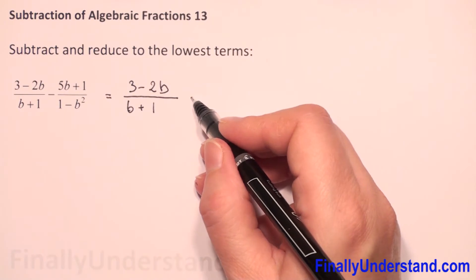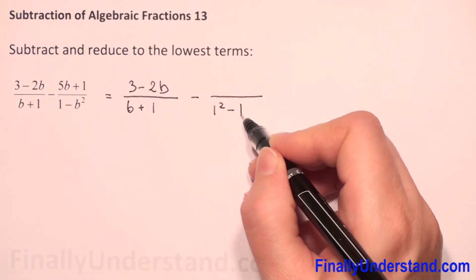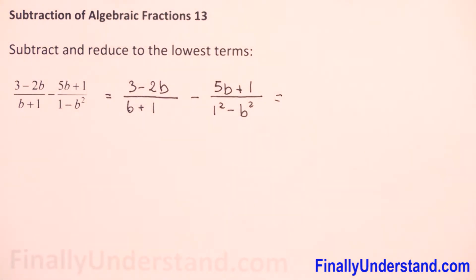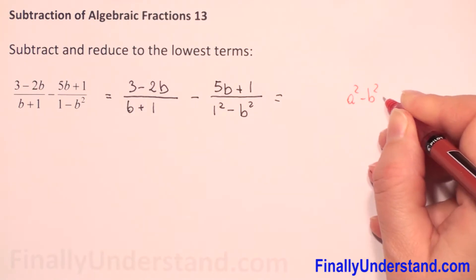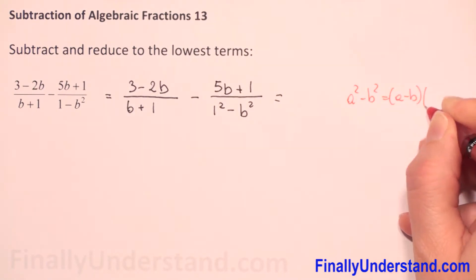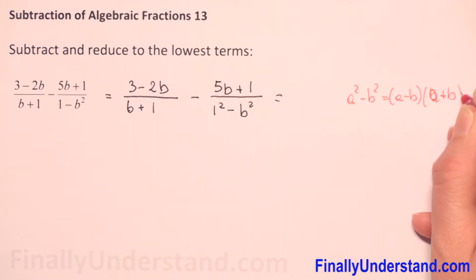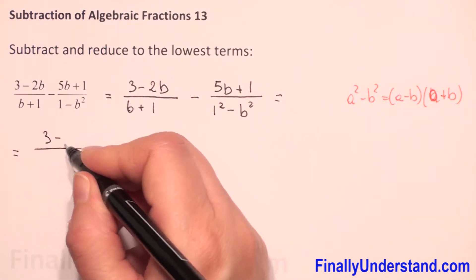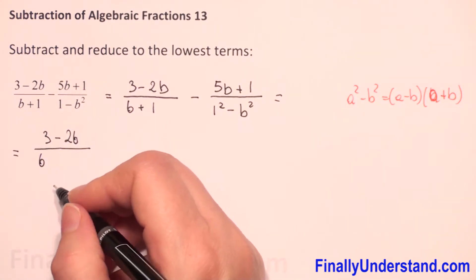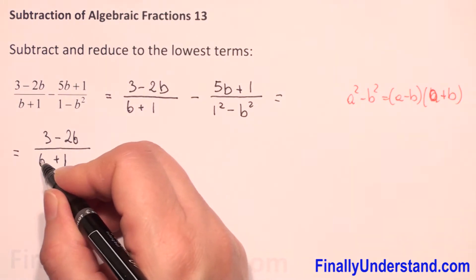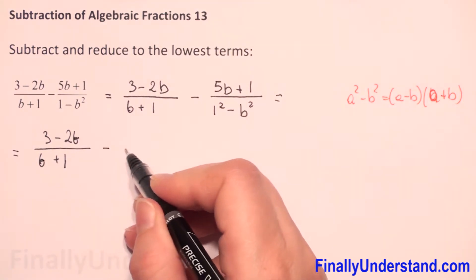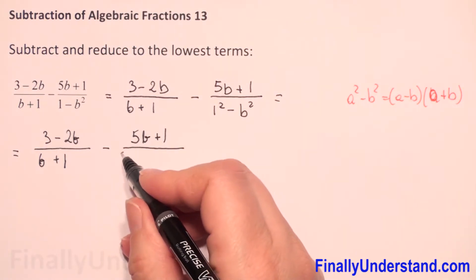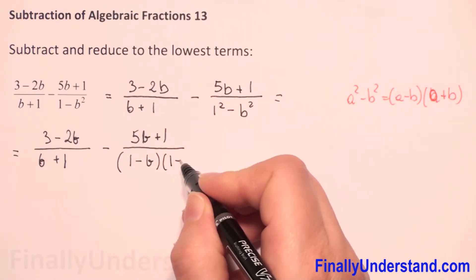We have b plus one in the first denominator, and one squared minus b squared in the second denominator. Now we will use the formula that a squared minus b squared equals a minus b times a plus b. So we factor the second denominator: the numerator of the second fraction is 5b plus 1, over 1 minus b times 1 plus b.